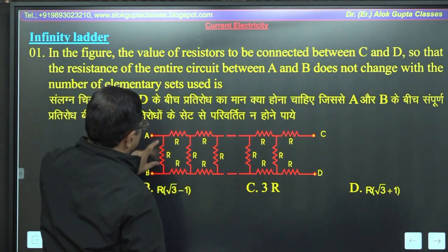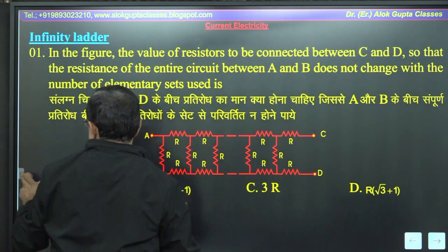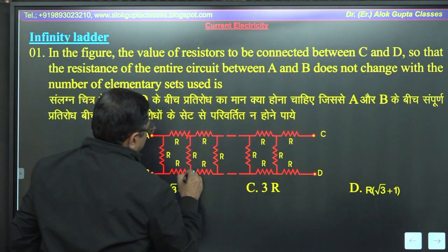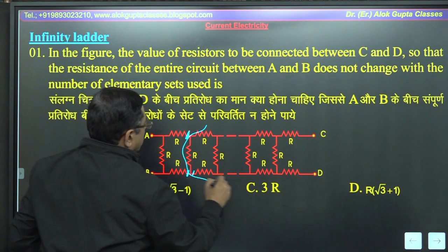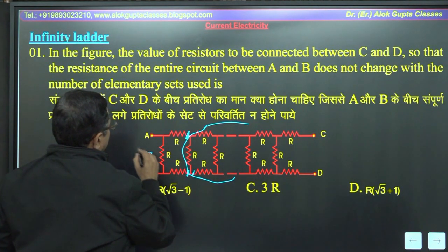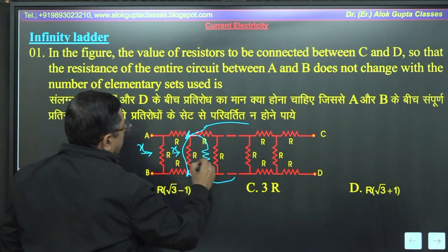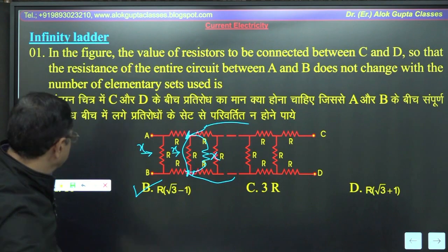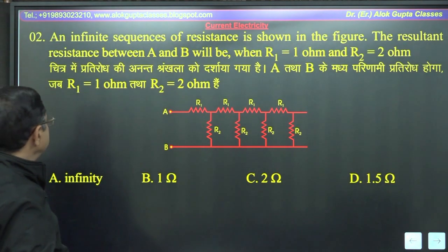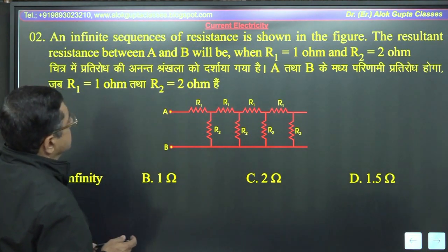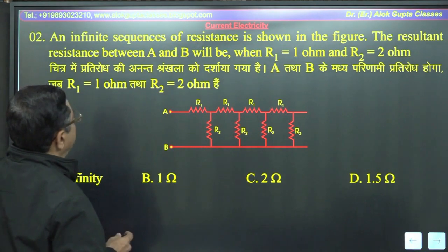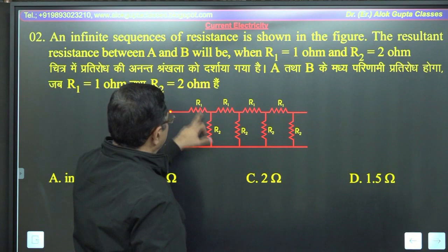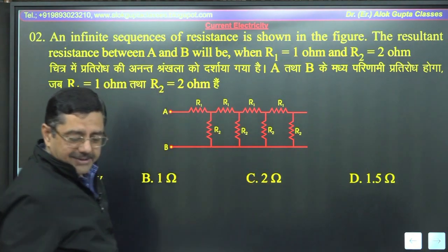इसका मतलब यह हुआ कि यह resistance R और इसके बाद यह दो resistance — इन दोनों resistance के जब आप यहां से cut करोगे, इस point से और इस point से, तो यह repetition होने लग जाएगा, यह पूरा का पूरा repeat होने लग जाएगा। यह तो हम कर चुके हैं, आपको explain किया है — answer 2 ohm था, C is correct answer।